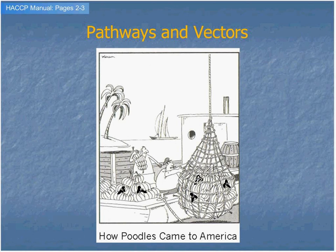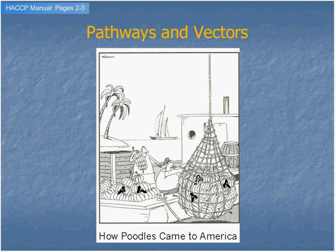Now let's talk about pathways and vectors — how are species moved around? We talked about the impacts; now we're going to talk about how they're moved from one place to another. We mentioned the shipping industry. Introductions of invasive species — we can't really pinpoint the exact time, date, and vector, but we can get a pretty good idea. The shipping industry has the potential to move invasive species in ballast water and in some of the cargo.